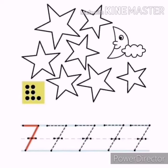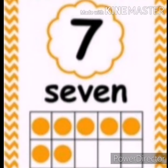How many dots are there? Let's count: one, two, three, four, five, six, seven. What's this number? Number seven. How many dots are there in the 10 frames? Let's count: one, two, three, four, five, six, seven. How many more would you need to get to 10? Let's count the empty frames: one, two, three. I need three to get to 10.